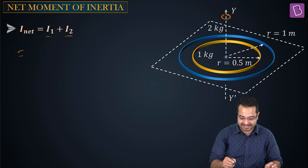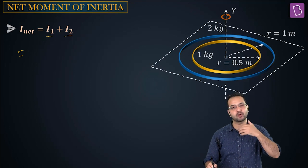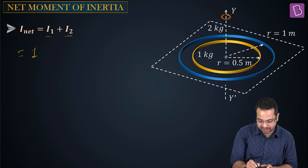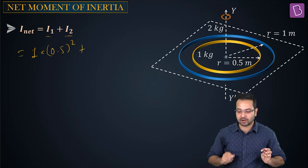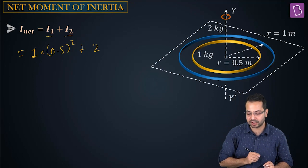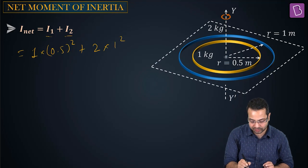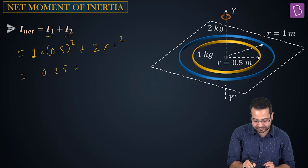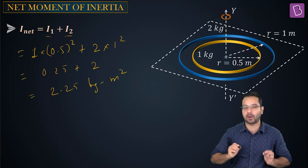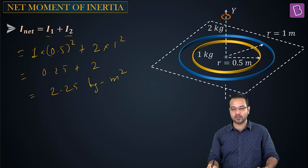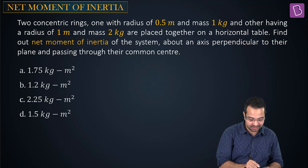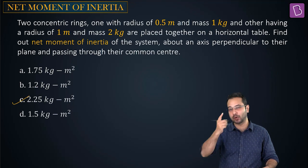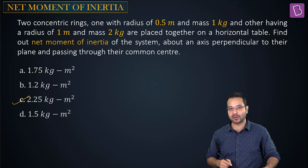Moment of inertia of the first (yellow) ring: MR² = 1 × (0.5)² = 0.25 kg·m². Moment of inertia of the second (blue) ring: MR² = 2 × (1)² = 2 kg·m². Total = 0.25 + 2 = 2.25 kg·m². The correct answer is 2.25 kg·m².